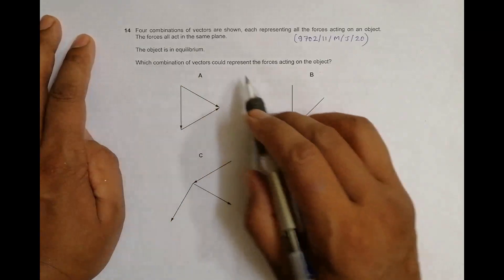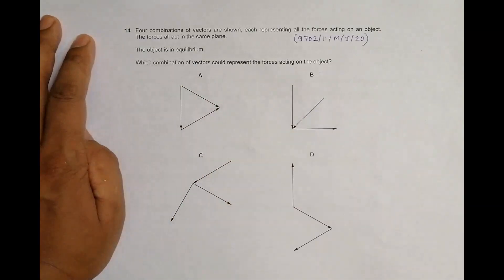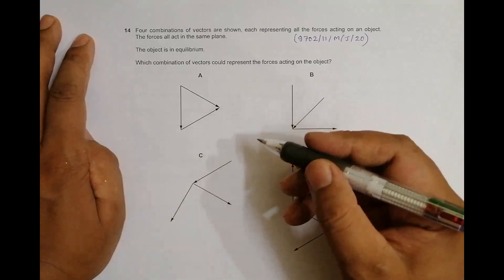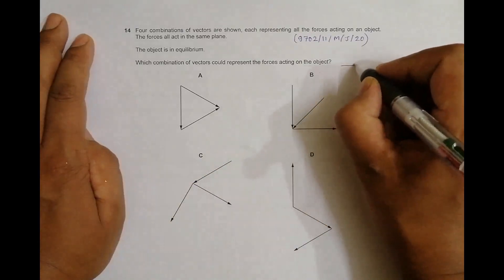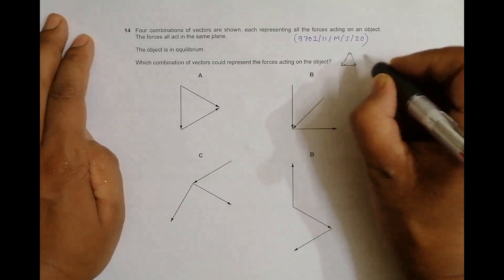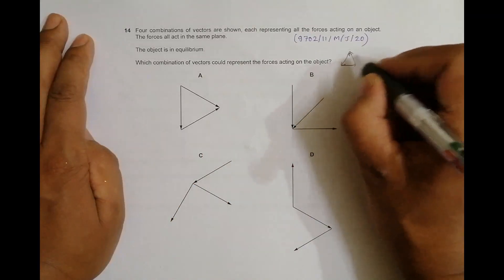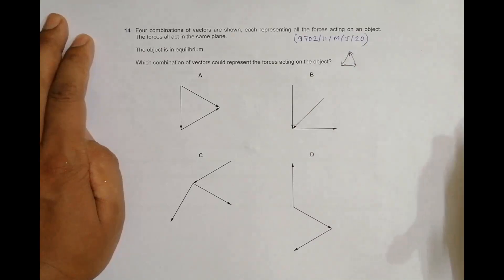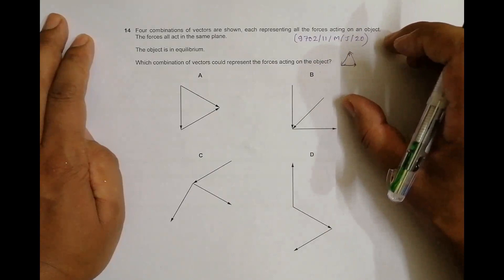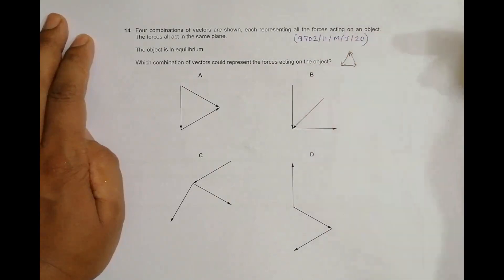Which combination of vectors could represent the forces acting on the object? In order for an object to be in equilibrium, the forces should be on the same plane and the forces should complete a triangle. The triangle if taken in order, that means one by one from the head of one I have to start the other force. So if it closes a triangle, then we can say that it's an equilibrium condition.